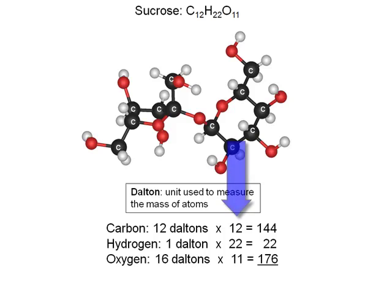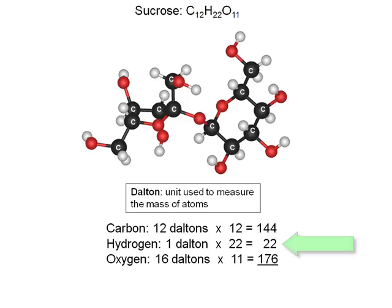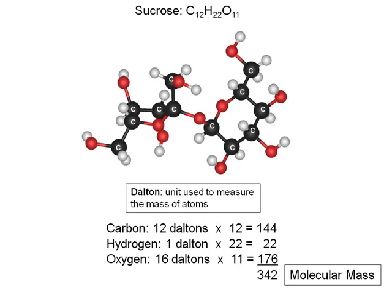You take these masses and multiply them by the number of their respective atoms in the molecule. So for sucrose, there are 12 carbons, so we take 12 Daltons times 12 carbons, and that gives you 144 Daltons of carbon. One Dalton times 22 hydrogens gives you 22 Daltons of hydrogen. And 16 times 11 gives you 176 Daltons of oxygen. You add all these up, and this gives you the molecular mass of sucrose, or 342 Daltons.